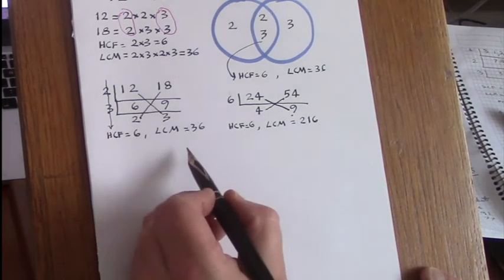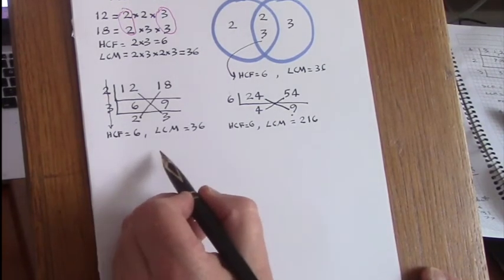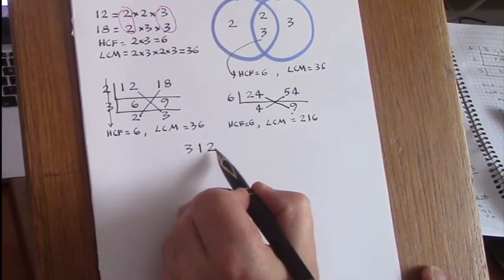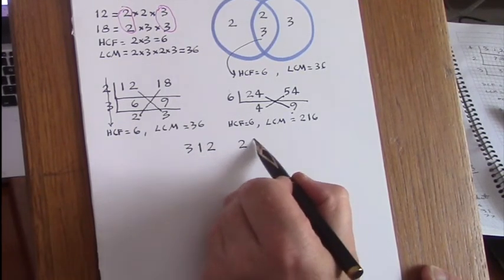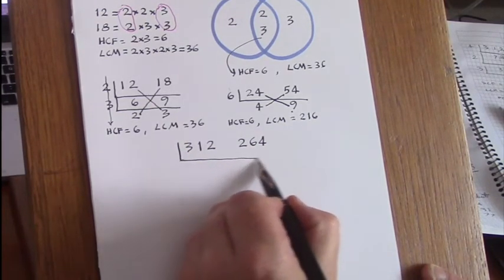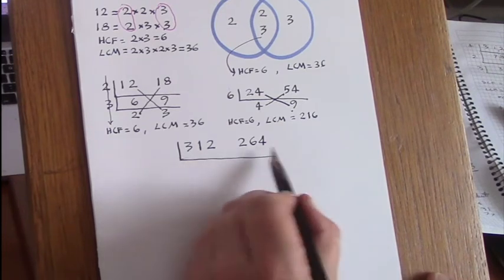Let's have a look at an example with larger numbers, say 312 and 264.